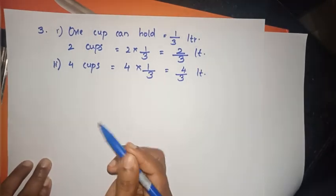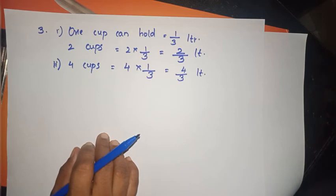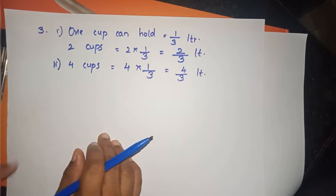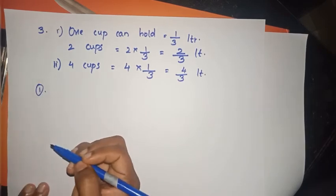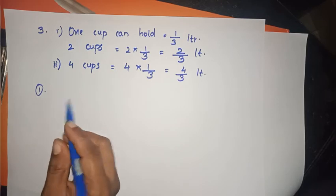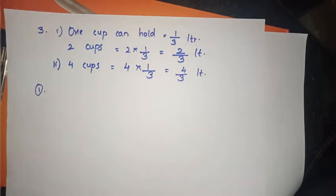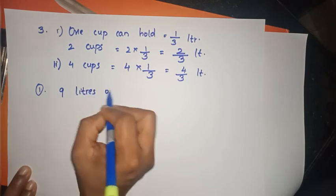Now we will do the next exercise on page number 30, first question. 9 liters of milk is equally shared by 4 kids. How much does each get? We have 9 liters of milk.